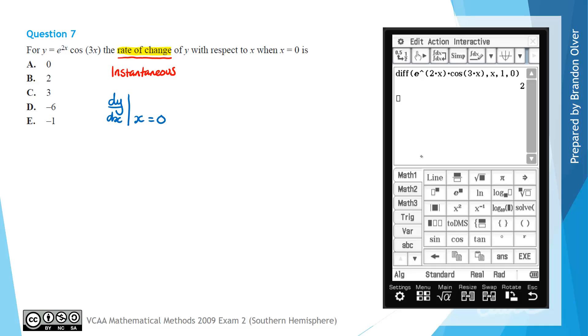From the CAS calculator we found that the derivative dy/dx when x is equal to 0 is simply equal to 2. So that makes option B the correct answer for this question.